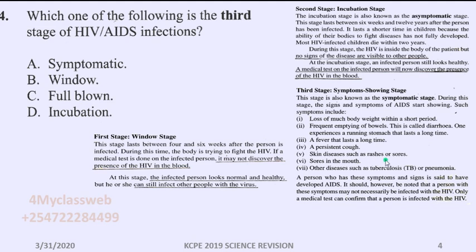Skin diseases such as rashes and sores will also start showing, as well as sores in the mouth which make it difficult for the patient to swallow food. Other diseases like tuberculosis and pneumonia will also start showing in the body. Remember, tuberculosis and pneumonia are what we call opportunistic diseases — these are the ones that actually cause the person to die. Note that AIDS itself is not what kills the patient, but these opportunistic diseases.